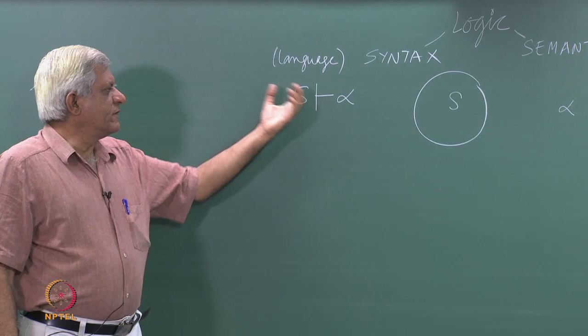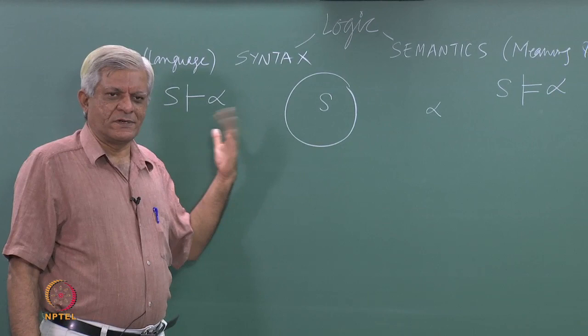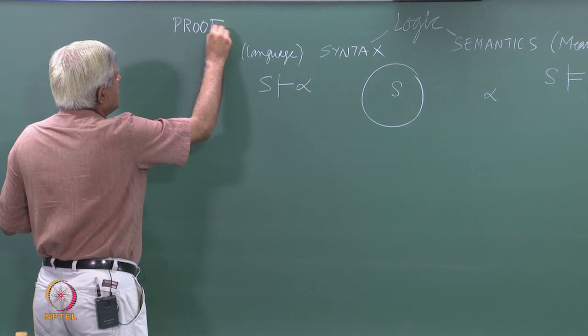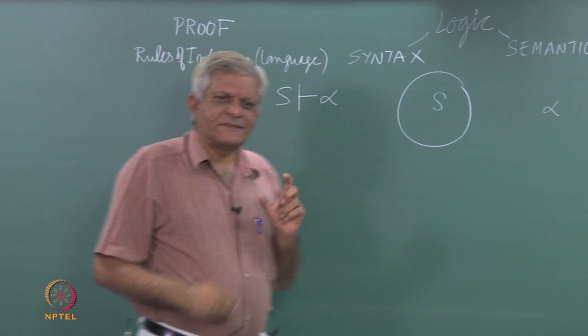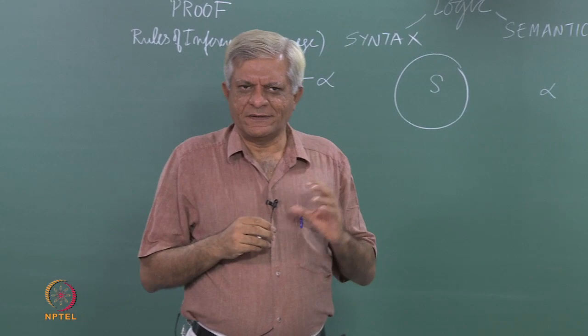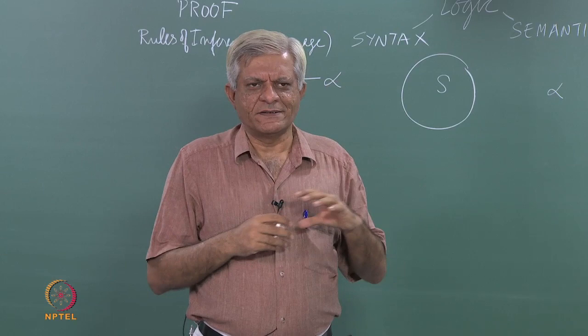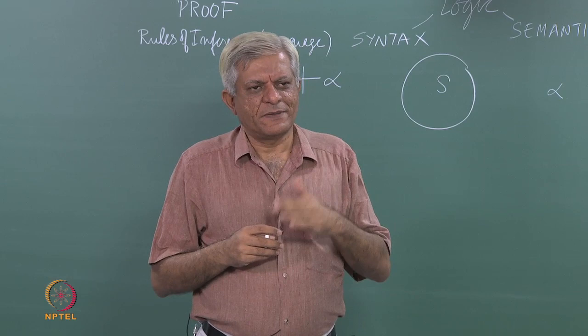We say that we can derive the sentence alpha given the set S. We are given the set of sentences — which we may call a knowledge base — and we want to find out what else can we add to that set. The notion of proof is based on the notion of rules of inference. Rules of inference are rules which tell you that given some pattern already present in the set of sentences, what new sentence can you add. A rule basically has a set of antecedents — for example, modus ponens says that if you can see alpha and alpha implies beta, then you can add the sentence beta to the knowledge base.